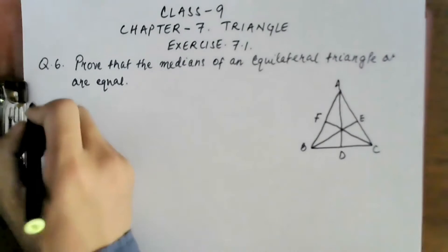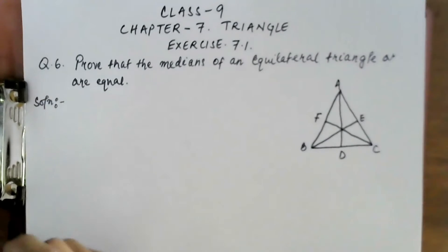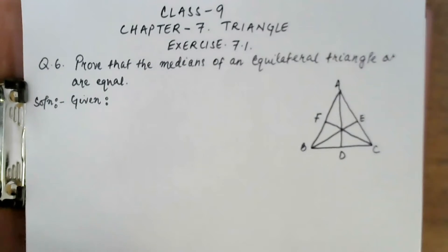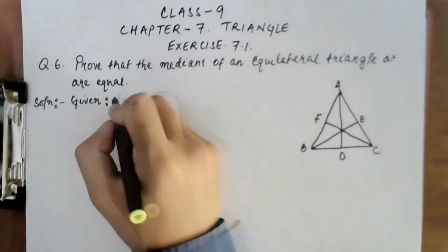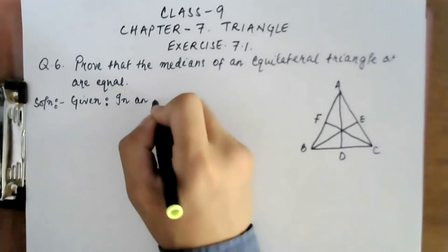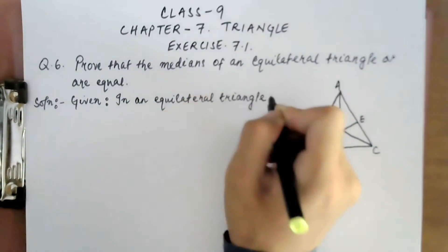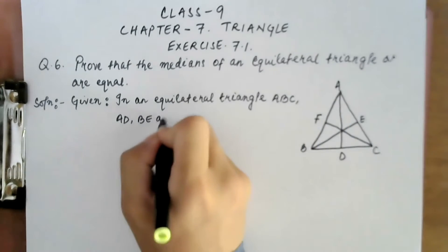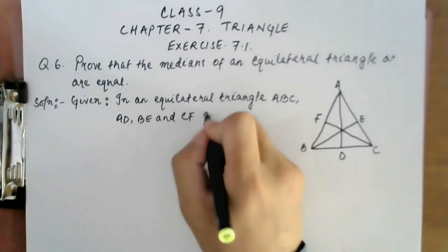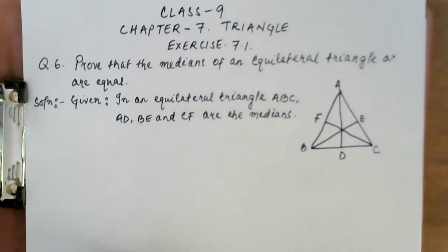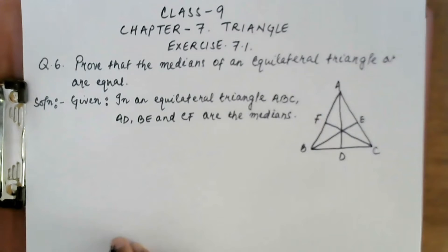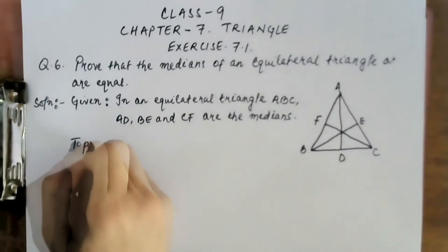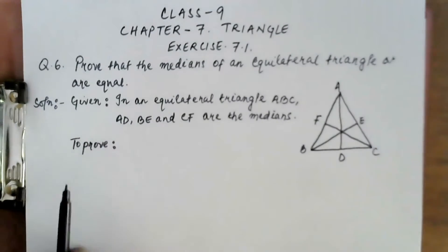Let's move to the solution. The first step is 'Given' — meaning anything that is given in the question, we write it down. So in an equilateral triangle ABC, AD, BE, and CF are the medians. In 'Given' we write only what is stated in the question; we don't take anything from elsewhere.